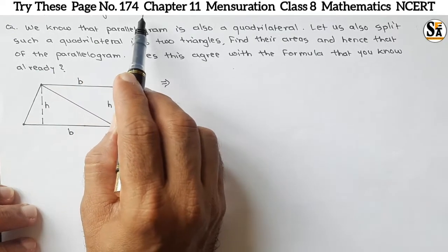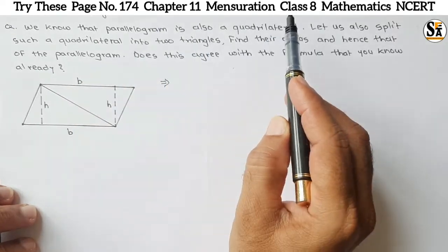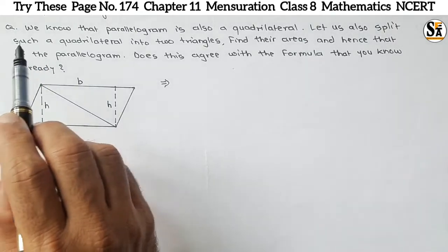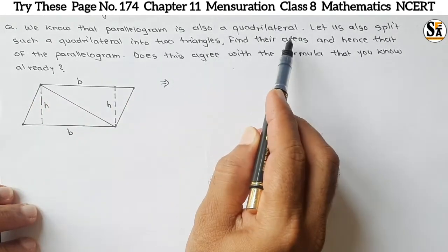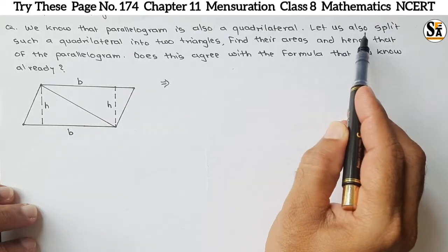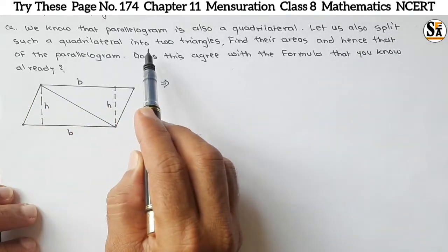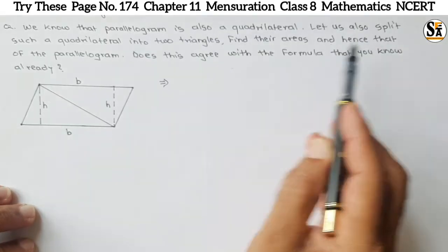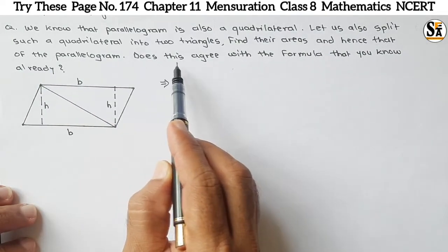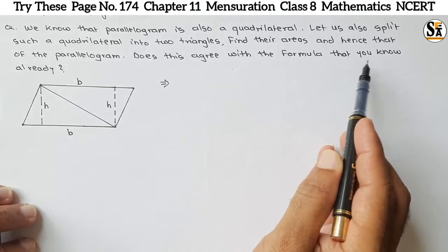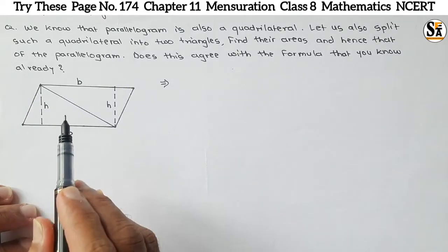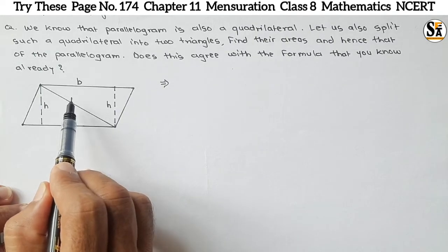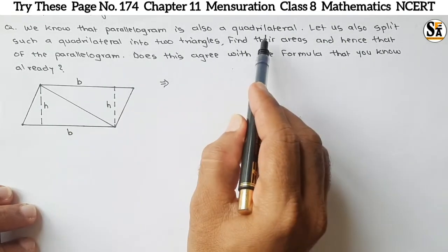The question is given: we know that a parallelogram is also a quadrilateral. Let us split such a quadrilateral into two triangles, find their areas, and hence find the area of the parallelogram. Does this agree with the formula that you already know? So a quadrilateral is given and it is also a parallelogram — that is the given statement.